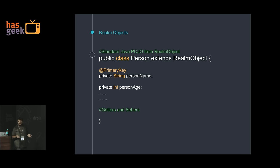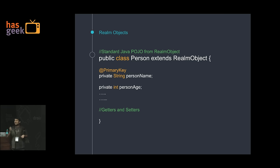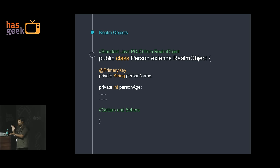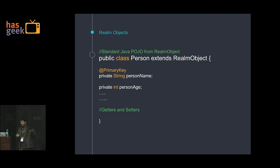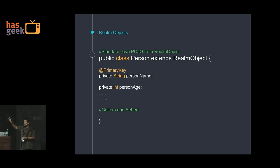To create a Realm object, you just define a POJO. The only thing you need to do is extend this POJO with RealmObject. Realm uses annotation processing, so when you compile the app it converts the whole thing into a Realm proxy object and does its own optimization. This adds limitations — you cannot implement multiple interfaces, you cannot do your own hashCode, and your getters and setters should be clean. But it gives very fine control over what your object is doing.